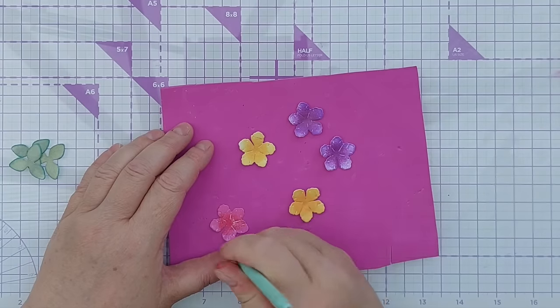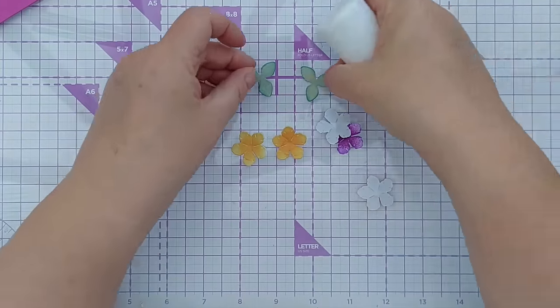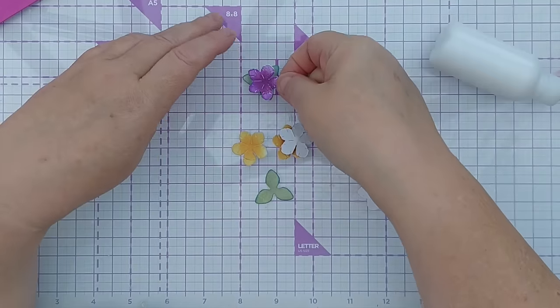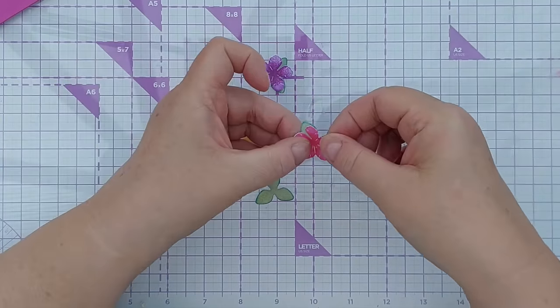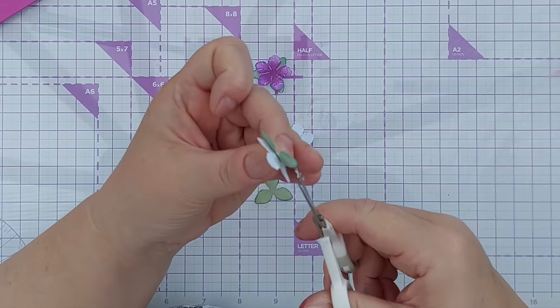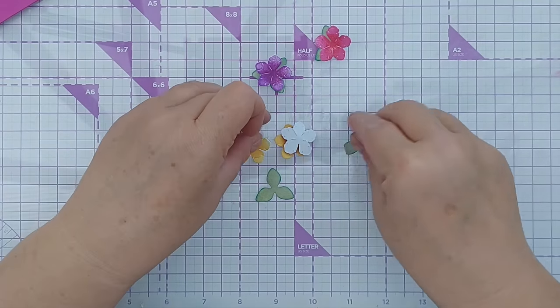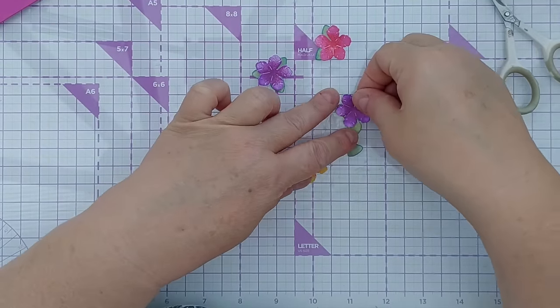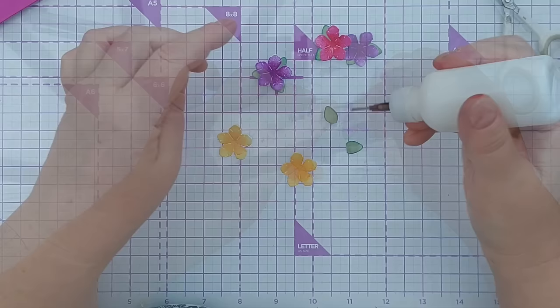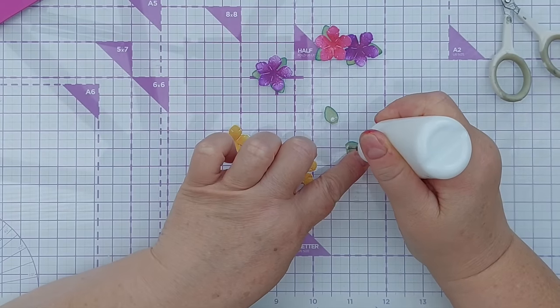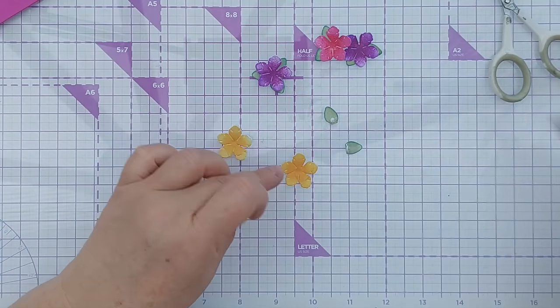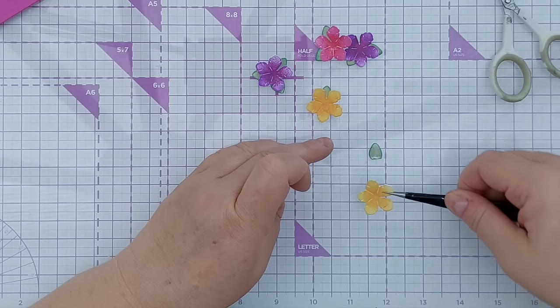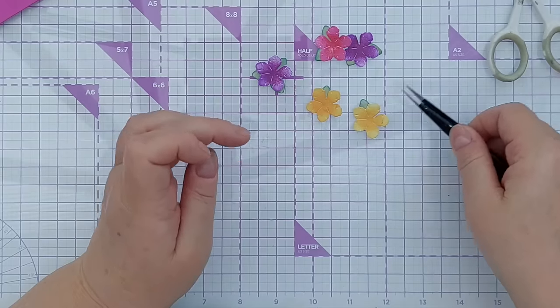I do need to cut some more leaves. We'll pop that on there and I'm just going to snip off one leaf, because now I can use that on another one. These yellow flowers are just going to get one little leaf peeking out each. Again, that brings in some variation, it's not all identical.